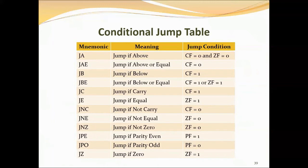Next is JAE (jump if above or equal), JNBE (jump if not below), and JNC (jump if no carry). Any one of these instructions causes program execution to jump to the label given in the instruction if CF is zero. The range of displacement is minus 128 bytes to plus 127 bytes. These terms are used when considering the magnitude of two unsigned numbers.